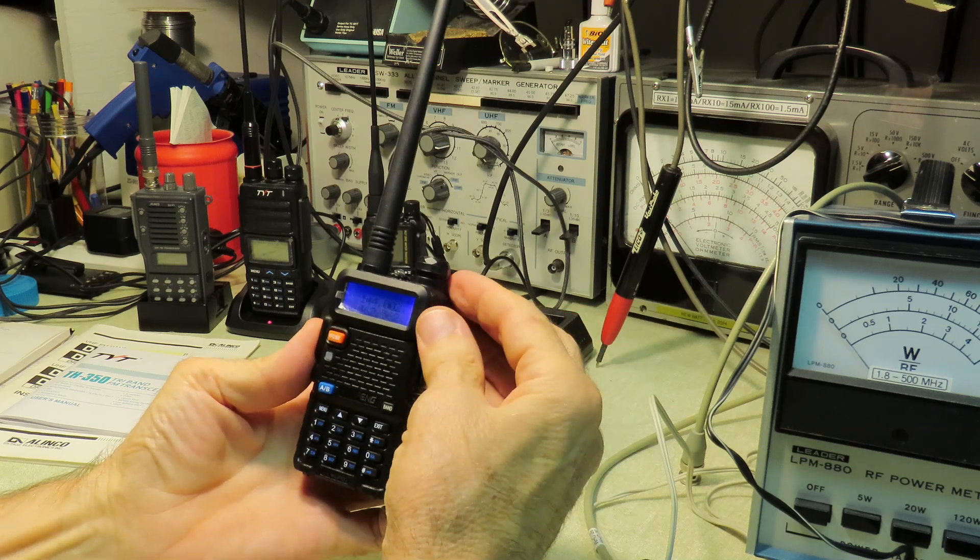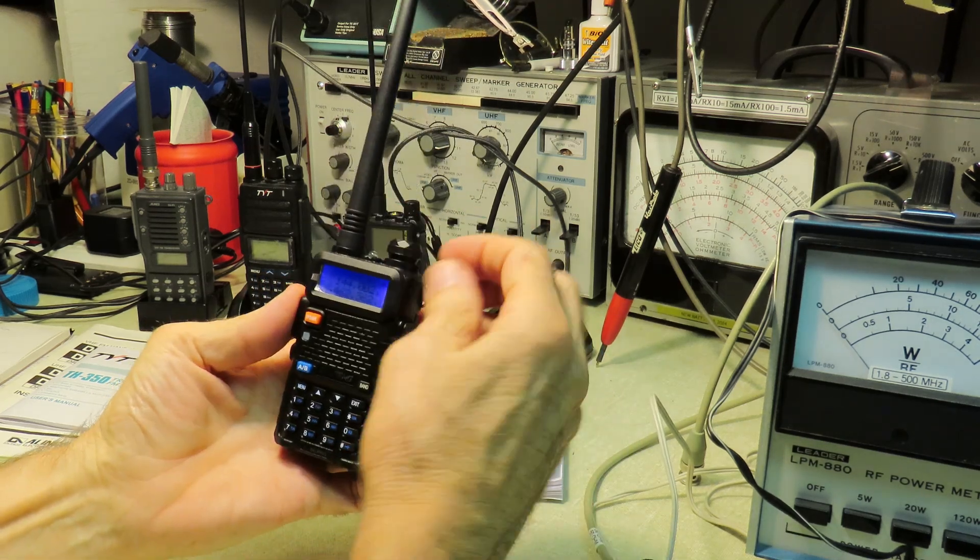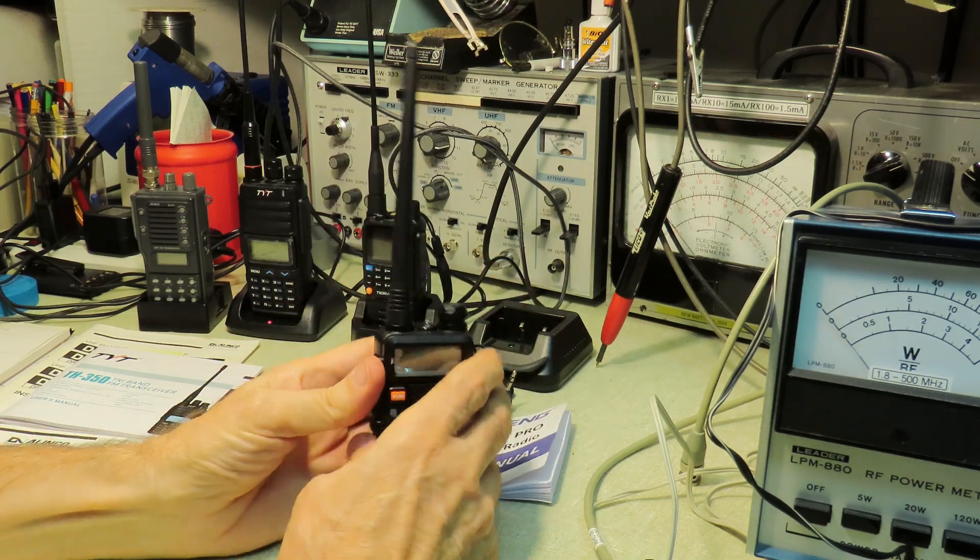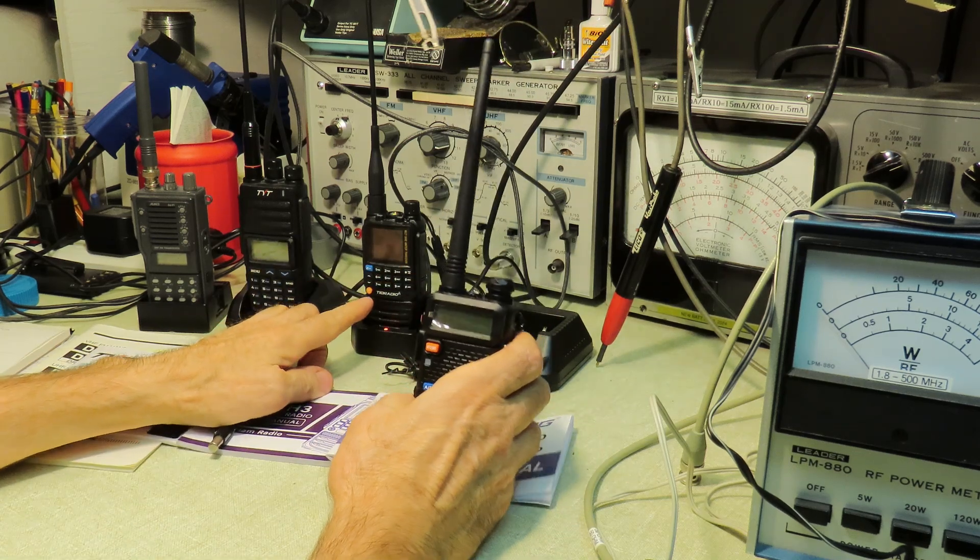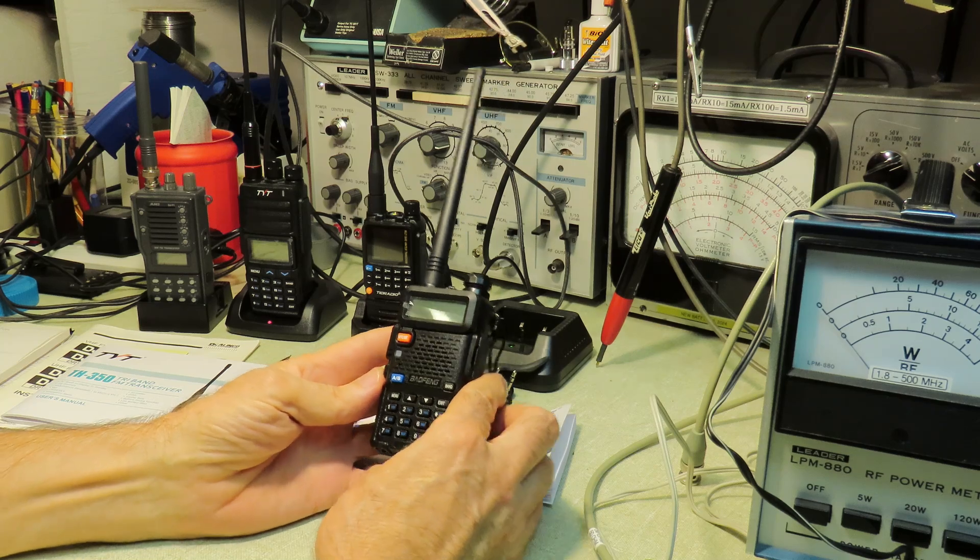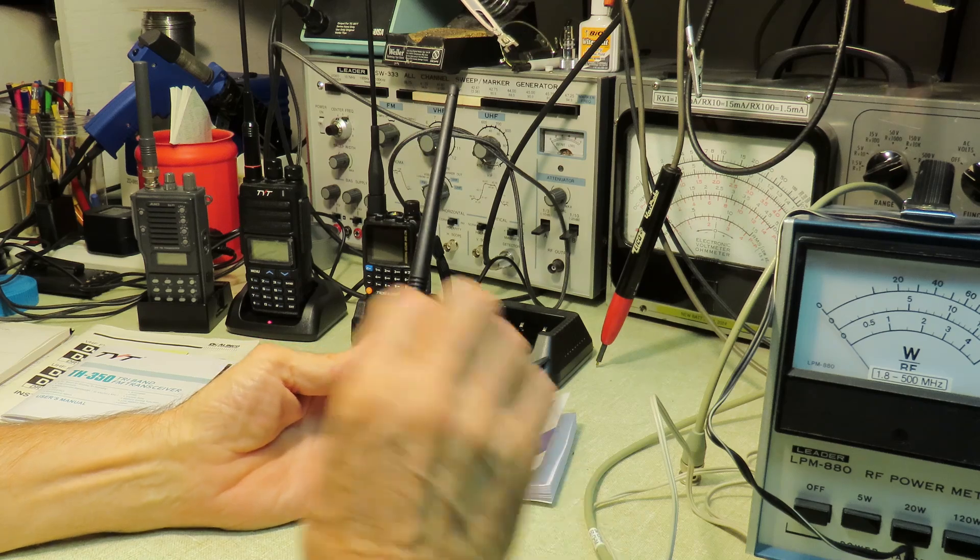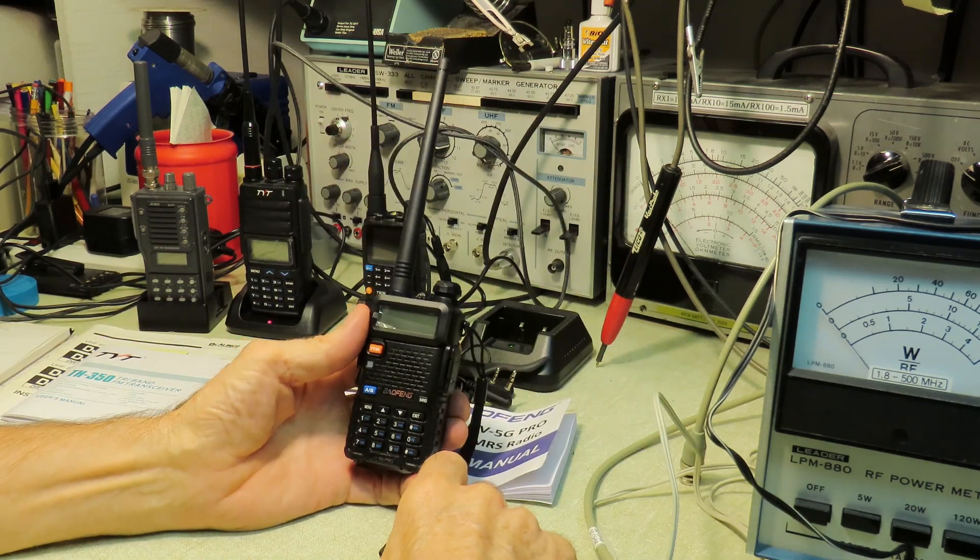It's got a decent-looking two-line display, alphanumeric. You can change the color of the backlight. Like all of these radios, it's got a flashlight, and like its cousin over here, the TID radio, it has that absolutely moronic alarm feature, where if you push a certain button, it transmits alarm tones and flashes the LED on the top.